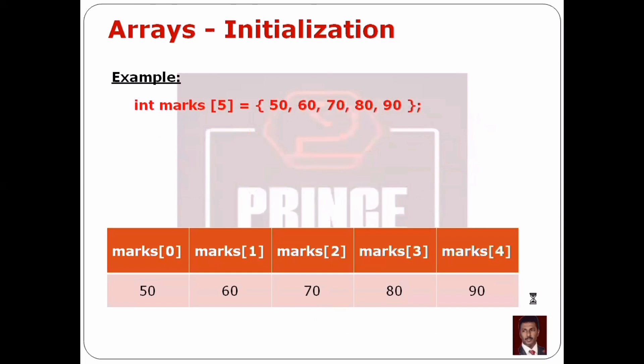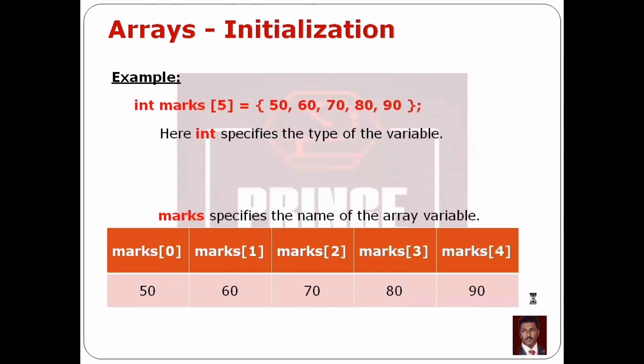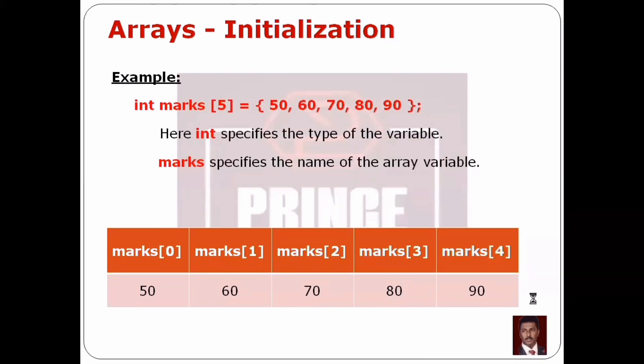Let's look at an example: int marks[5] = {five values}. int is the type of the array, marks is the name of the array variable, 5 is the size of the array variable. In the array, integer type, we can store 5 elements maximum. The array variable is marks. Then we initialize values using the assignment operator and curly braces, separating 5 values.